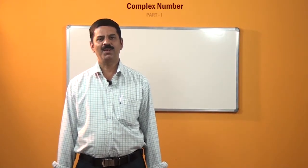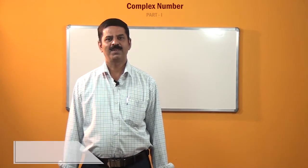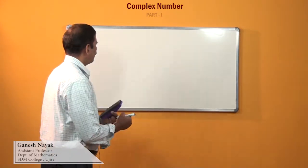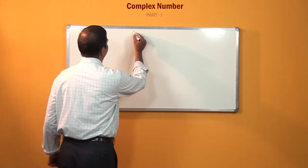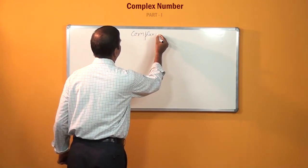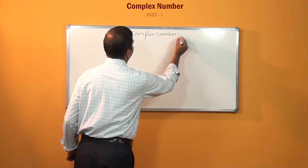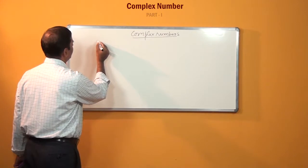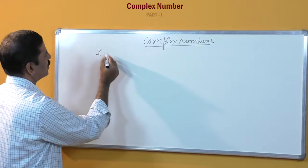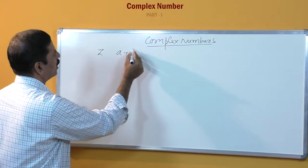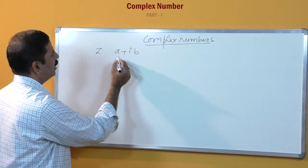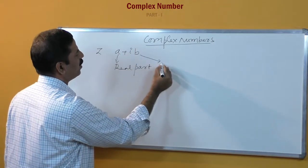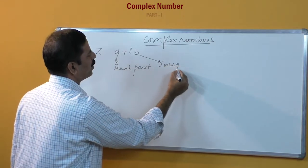Dear students, today we will try to know about the complex number. A complex number is a number of the form a plus ib, where a is called the real part and b is called the imaginary part.